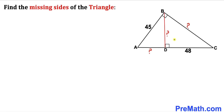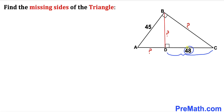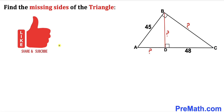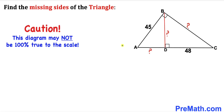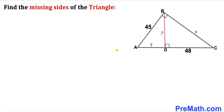In this video we have a right triangle ABC such that BD is an altitude. Side length AB is 45 units and side length CD is 48 units. We are going to calculate the unknown sides AD, altitude BD, and side BC. The given figure may not be 100% true to scale. Let's get started.